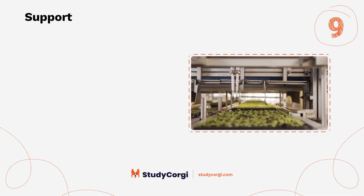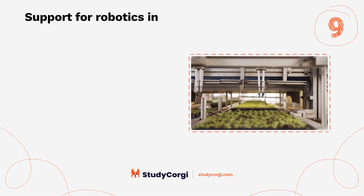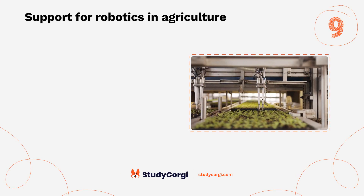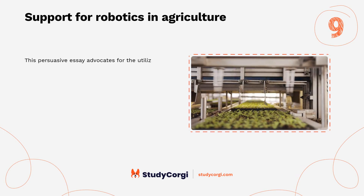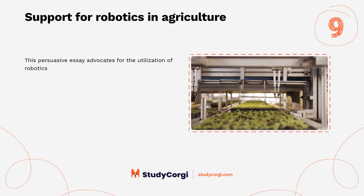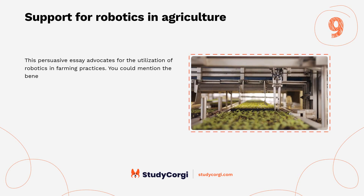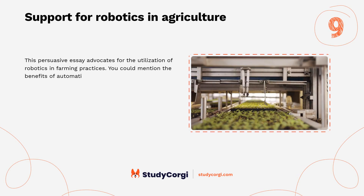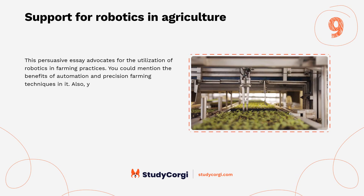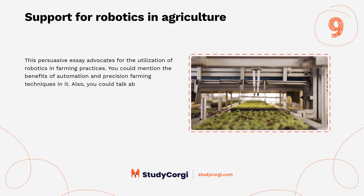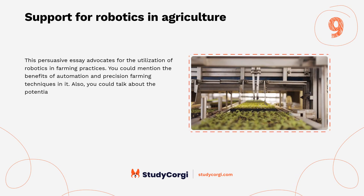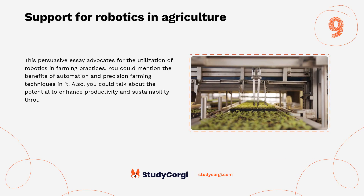Support for Robotics in Agriculture. This persuasive essay advocates for the utilization of robotics in farming practices. You could mention the benefits of automation and precision farming techniques, and talk about the potential to enhance productivity and sustainability through robotics.